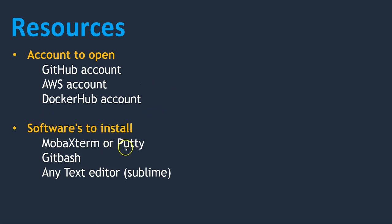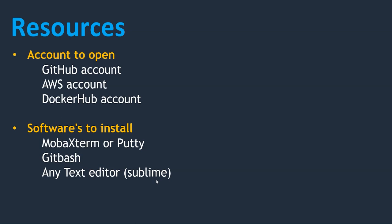For software to install: we need MobaXterm or Putty if on Windows. If you are using Mac OS, no need to install since Mac has Terminal which we can use to connect to our servers. Then Git Bash, and any text editor — I am using Sublime Text Editor, but you can use whichever you are comfortable with. That's all for this lecture. In the next section, we are going to see about Git.